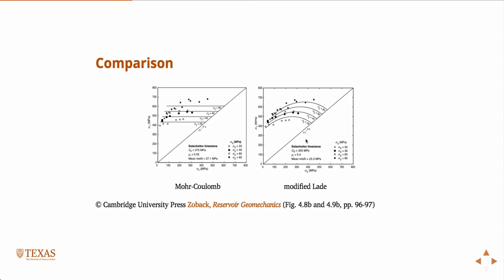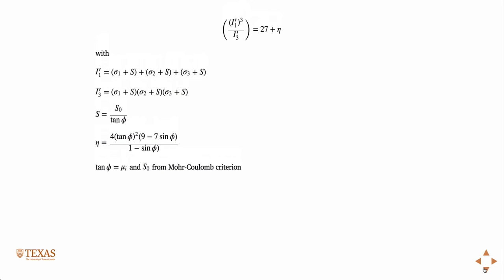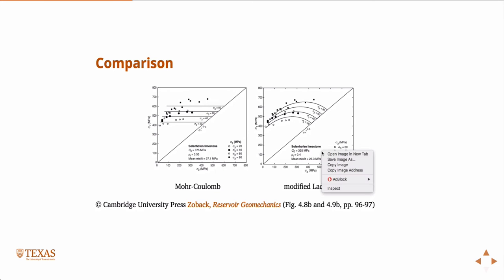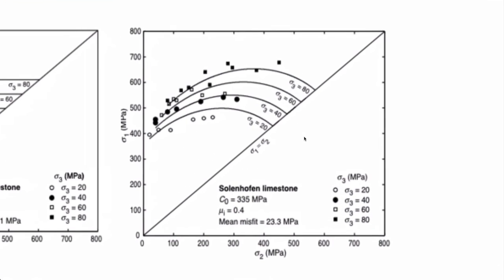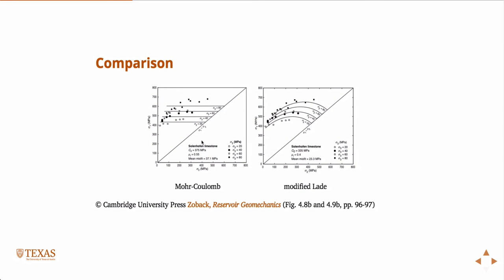If you look at this plot, sigma-2 is a function of sigma-1, and these dotted values are real data for some limestones with different values of sigma-3.